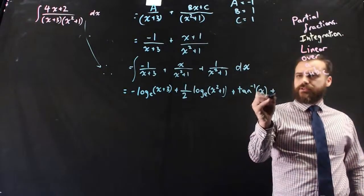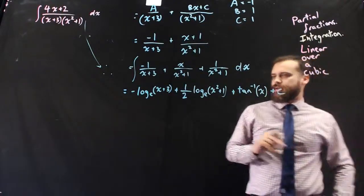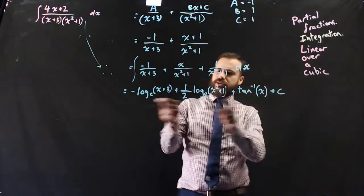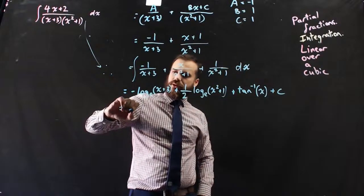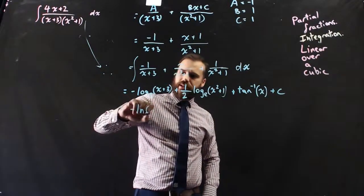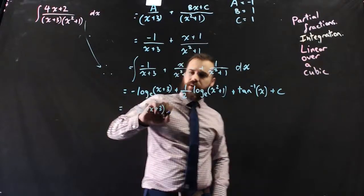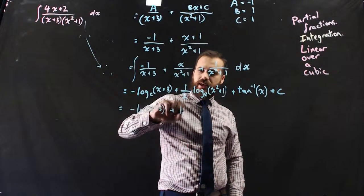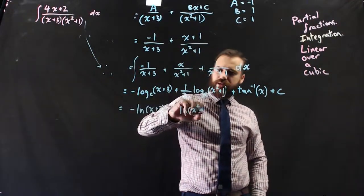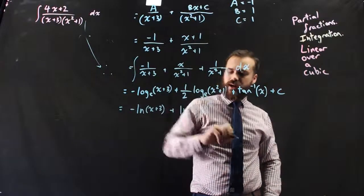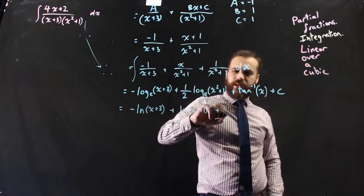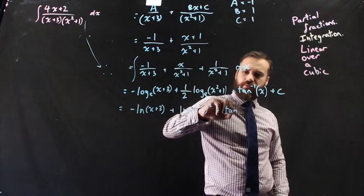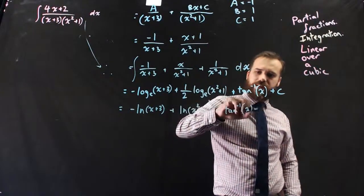And don't forget your little plus c on the end. Now, you can muck around with these two to combine them. So I'm just going to start calling this ln instead. It's going to save me some time. Plus ln x squared plus 1 to the half plus tan inverse x plus c.